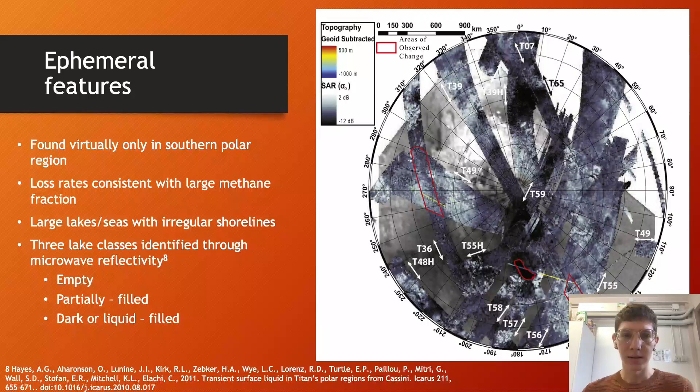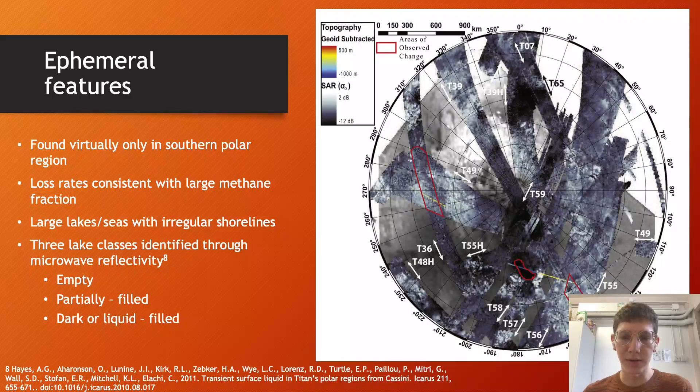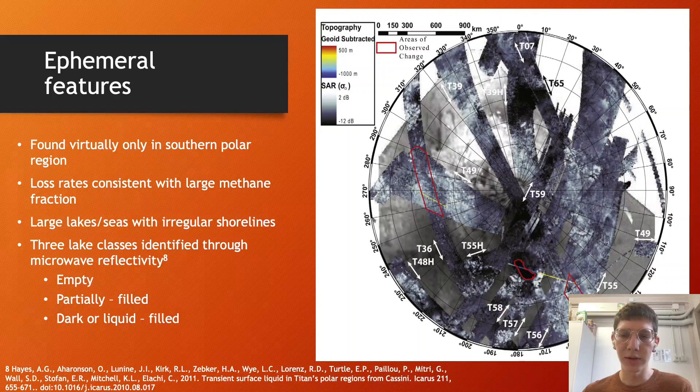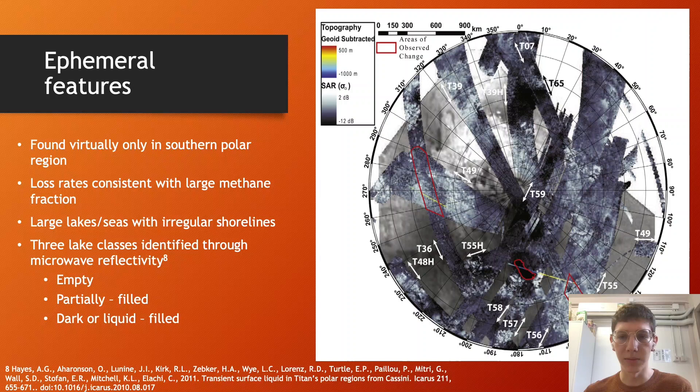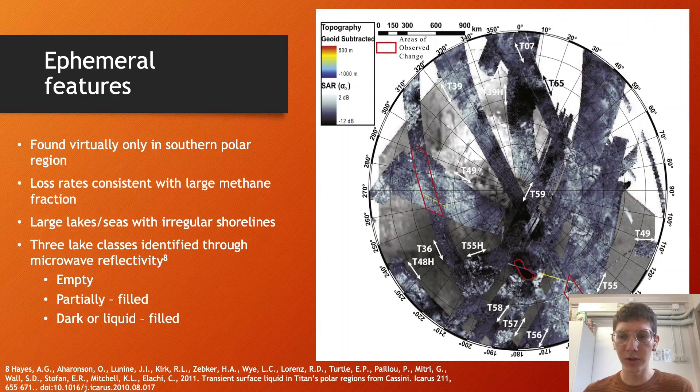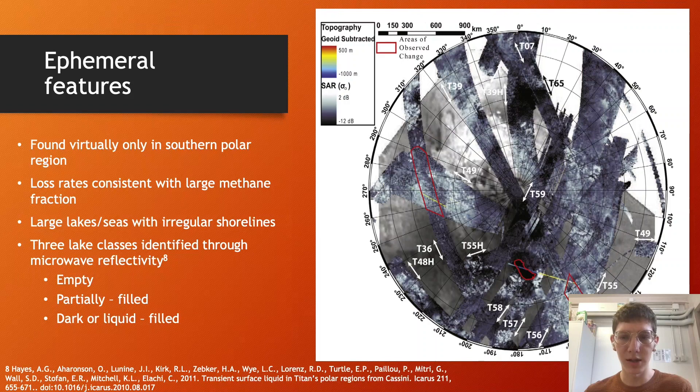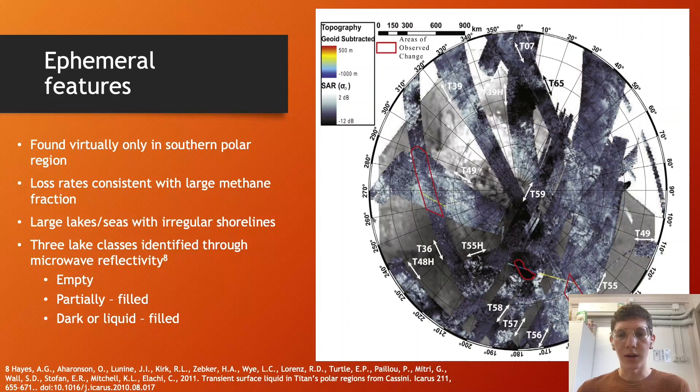This is a SAR mosaic of Titan's south polar region from 90 to 55 degrees south for September 2005 through January 2010. The three areas which include ephemeral features are outlined in red. Titan's south polar region was in summer during this time and expected to be in a state of volatile evaporation. These ephemeral lakes are found virtually only in the southern region and may be due to surface changes including liquid evaporation, infiltration, freezing, wave activity, and cryovolcanism. The ephemeral feature loss rates are also consistent with predominantly methane composition.